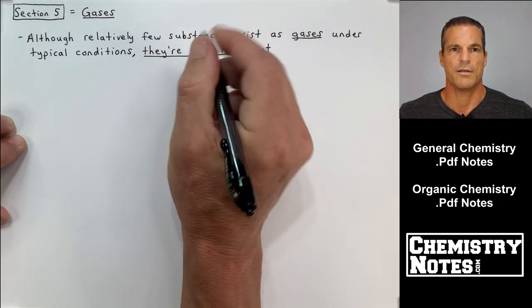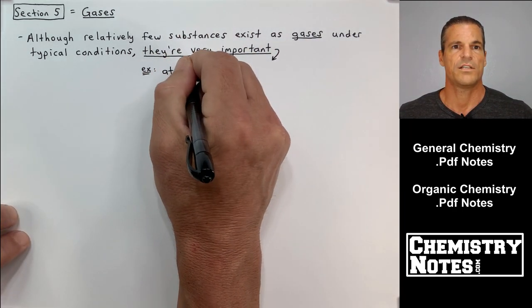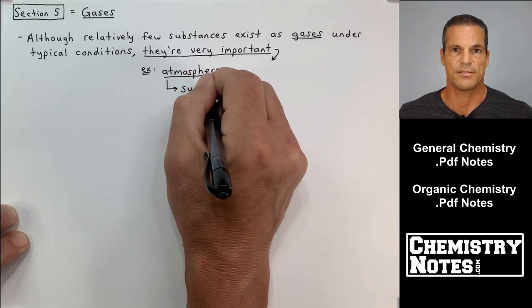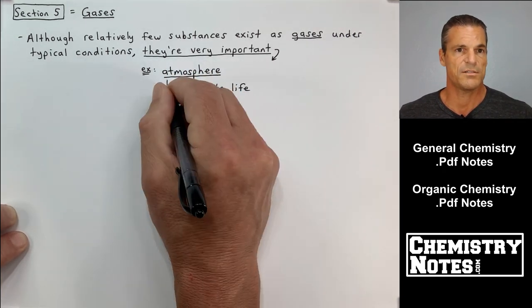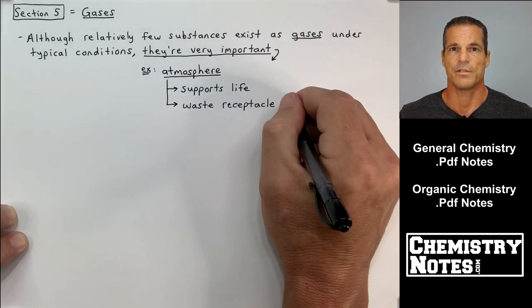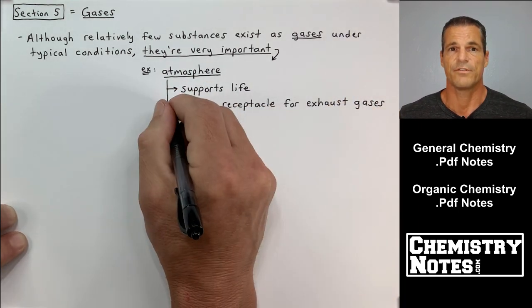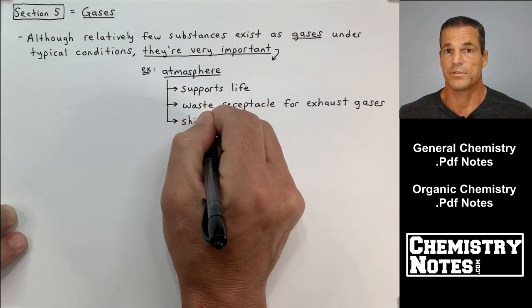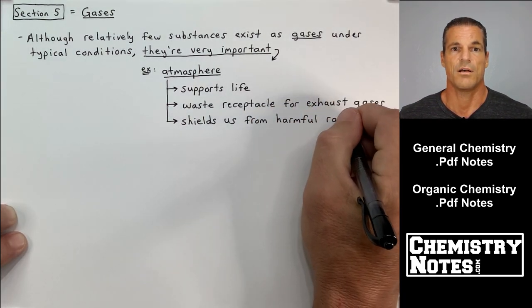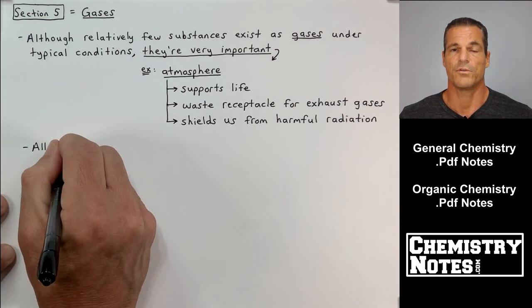The first bullet point says, although relatively few substances exist as gases under typical conditions, they're very important. One very obvious example is our atmosphere. Our atmosphere supports life, it's a waste receptacle for exhaust gases produced here on earth, and the atmosphere shields us from the sun and its harmful radiation.